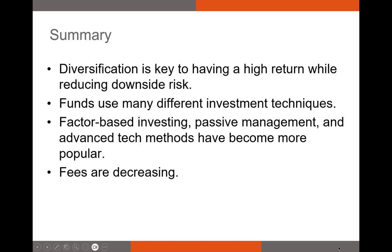To summarize: diversification is key to achieving high returns while reducing downside risk — we diversify to eliminate or significantly reduce firm-specific risk. Funds use a variety of investment techniques: factor-based investing, traditional investing, AI and neural networks, and more. We also covered passive management and advanced tech methods. Finally, fees are absolutely decreasing through time — passive management is becoming more popular and there's more competition among mutual funds, forcing fee cuts to remain competitive. If you have any questions, please feel free to reach out.